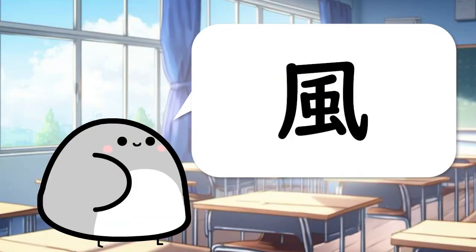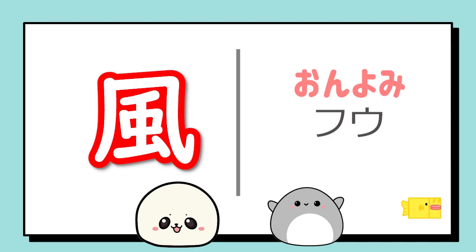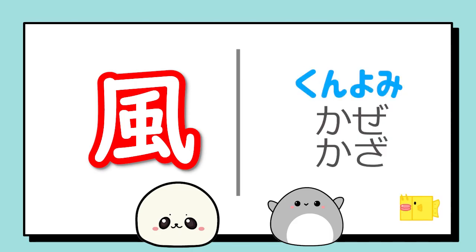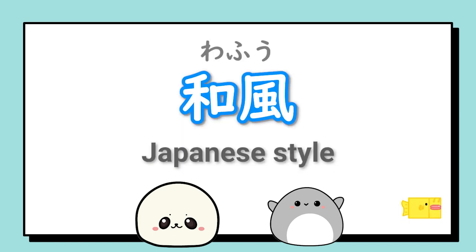How do we read this kanji? Onyomi is fuu. Kunyomi is kaze, kaza. An example word is wafu.